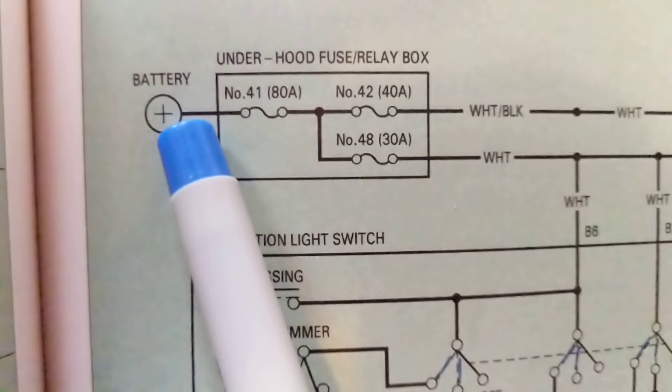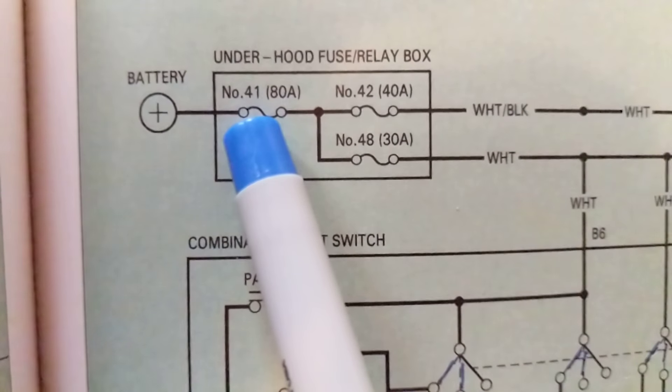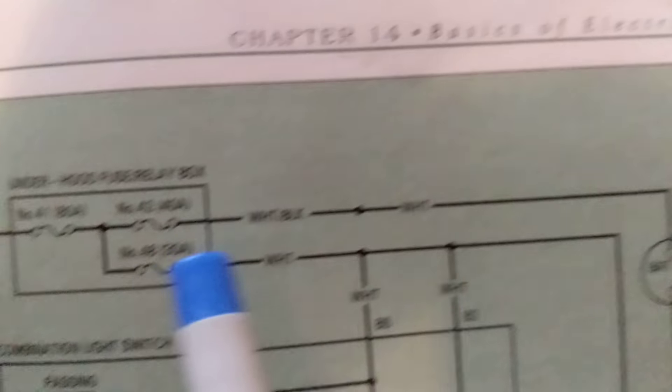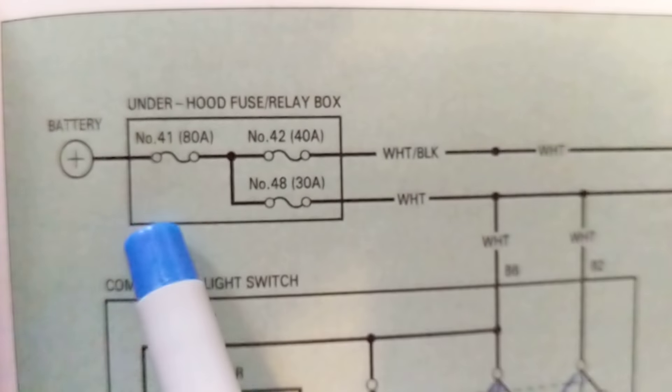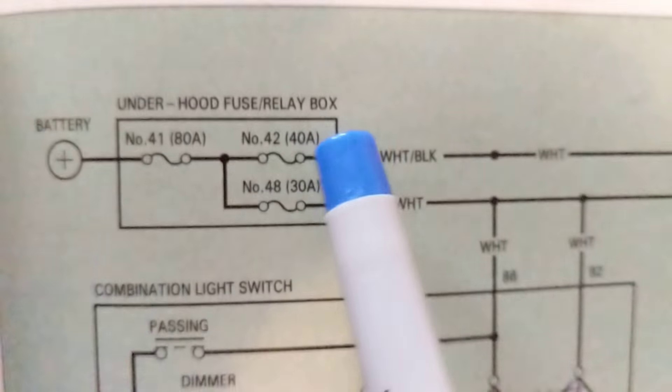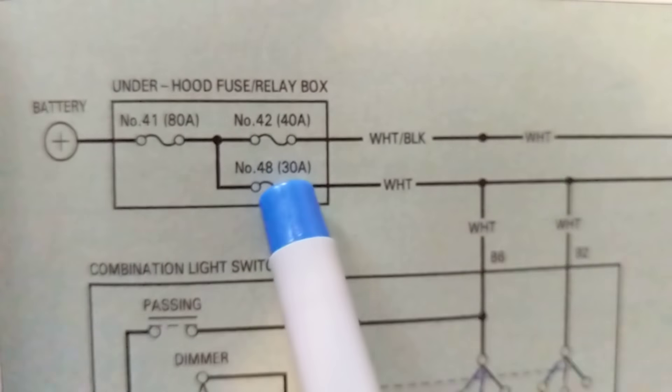So as long as you have one connection, solid connection from here to here. Other side of fuse goes to this fuse. The other side of this, this side of the fuse and remember this is under hood, we're talking about automotive, it's telling you the location of all these three fuses.